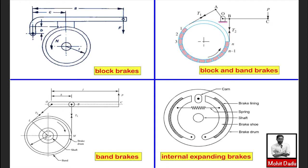Detailed analysis of block brakes — including free body diagrams, force analysis, and calculation of frictional torque — will be done in the coming lectures. In the second type of mechanical brake, band brakes, the frictional material or lining is used over the brake drum in the form of a belt, and such a brake is known as a band brake.